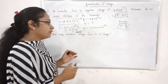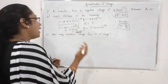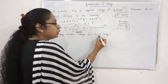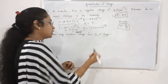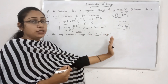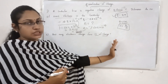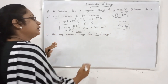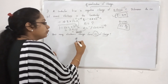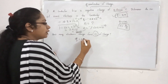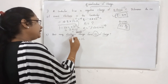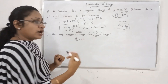Let's talk about the second question: How many electronic charges form 1 coulomb of charge? Q is equal to 1 coulomb. How many electronic charges?